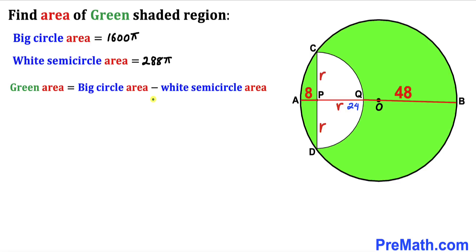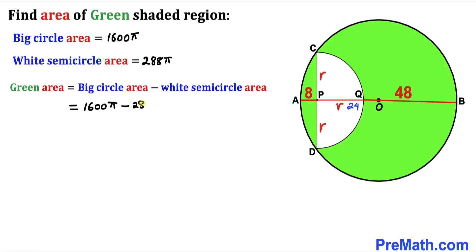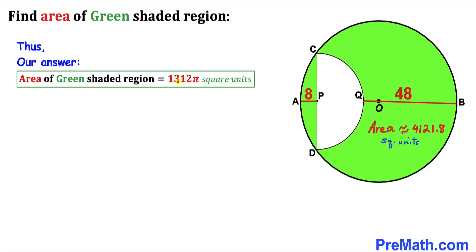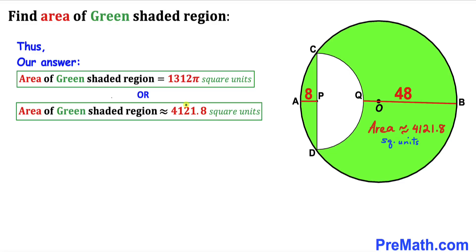For our final step, let's plug in these values: the area of the green shaded region equals 1600 pi minus 288 pi, which equals 1312 pi square units. That is approximately equal to 4,121.8 square units.